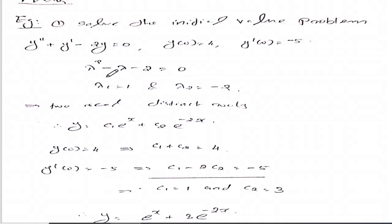The auxiliary equation is lambda square plus lambda minus 2 equal to 0. Solving this gives lambda 1 equal to 1, lambda 2 equal to minus 2.